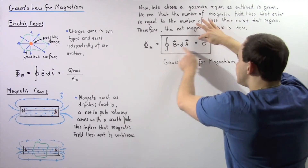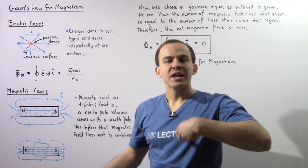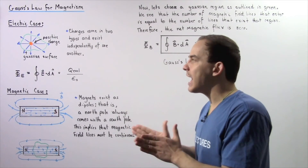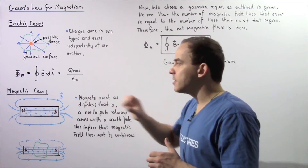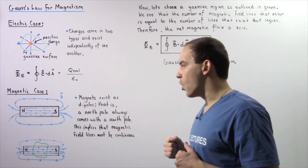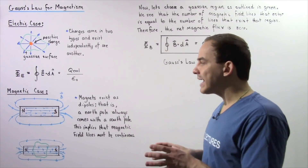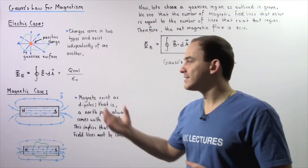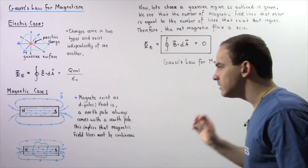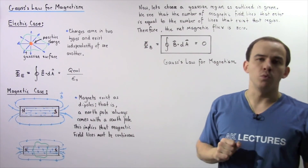The reason this is equal to zero is because a magnet always has a north pole and a south pole. In the electric case, we can isolate our two types of different electric charges, but in the magnetic case, we can never isolate a north pole and a south pole. Whenever we have a magnet that produces magnetic field lines, that magnet carries a north pole as well as a south pole. From this equation, we see that our magnetic field lines must form continuous loops.